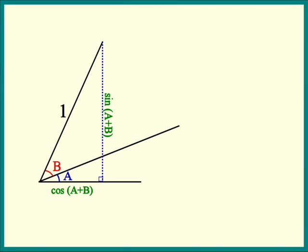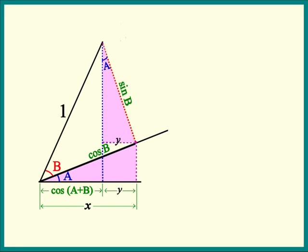This is the same picture we constructed last time. Those two pink triangles play an important role again, because we can see that our cosine of a plus b is equal to x minus y, where x and y each correspond to a leg of a pink triangle.